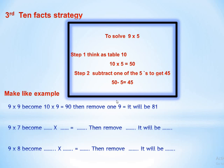Let's solve some exercises using the ten fact strategy. Example 1: 9 times 9. Change 9 into 10: 10 times 9 equals 90. Then subtract 9: 90 minus 9 equals 81. Example 2: 9 times 7. Change 9 into 10: 10 times 7 equals 70. Then subtract 7: 70 minus 7 equals 63.